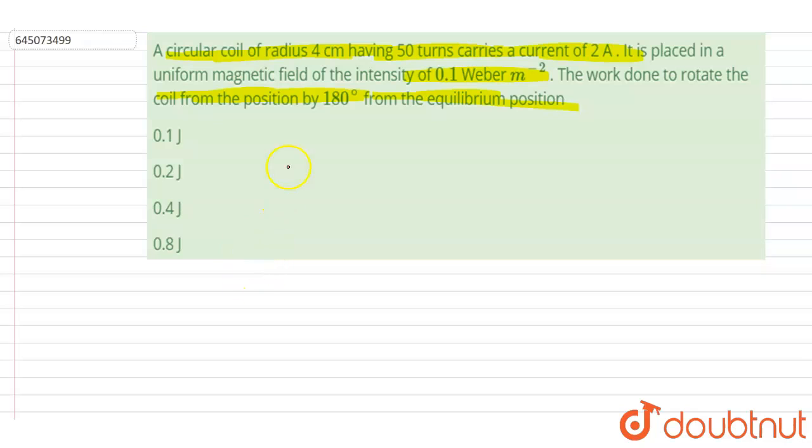If you see here the number of turns is 50, the radius is also given, current is also given. We can get the magnetic moment of this coil, so it will be number of turns times current into area. Since this is a circular loop, the area will be π r².